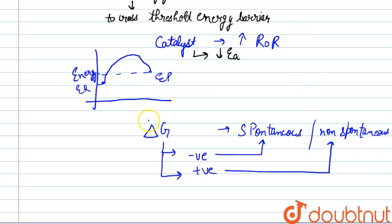And delta G has nothing to do with the catalyst. No effect of catalyst on delta G. Because catalyst can only alter the rate of reaction, it cannot interfere with the feasibility of the reaction.